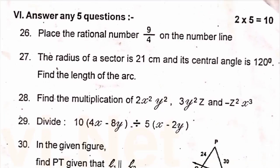28th, find the multiplication of 2x square y square, 3y square z and minus z square x cube. Then 29th, divide 10 into 4x minus 8y divided 5 into x minus y.